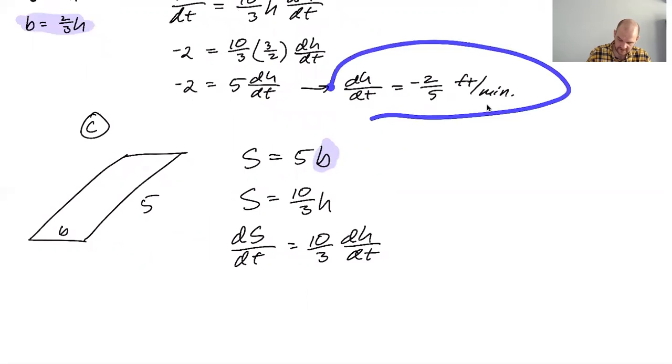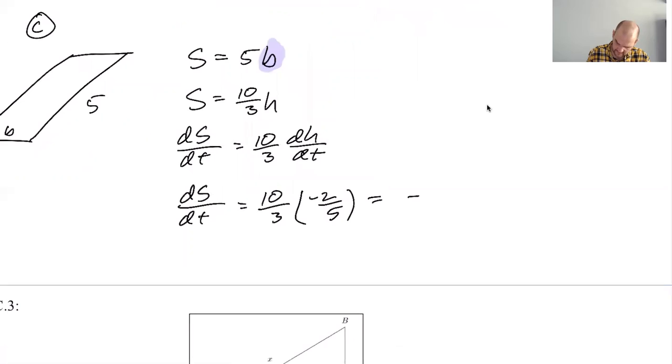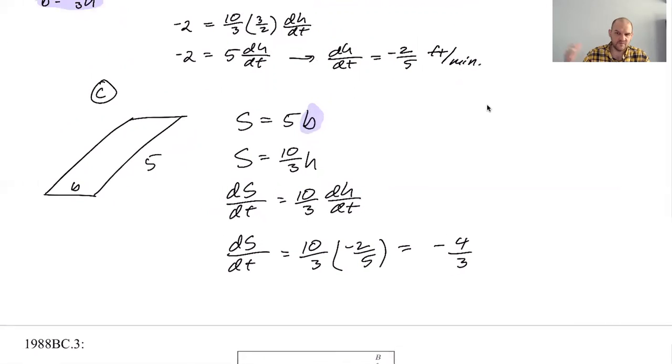And at this point you just have to use the answer that you got up here for dh/dt because like it's the only answer we have. So I'm gonna say dS/dt is ten-thirds times negative two-fifths, which is negative four-thirds. It's getting smaller. Well yeah that makes sense because things are draining, right? So that rectangle is going to keep getting smaller so it makes sense that it's smaller. Units are going to be feet squared per minute.